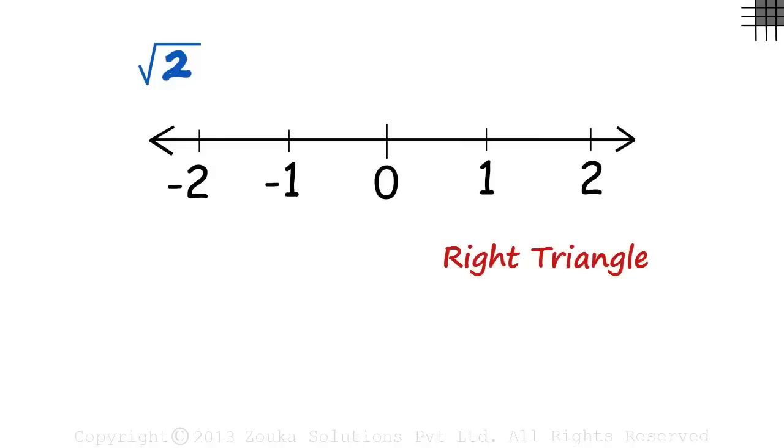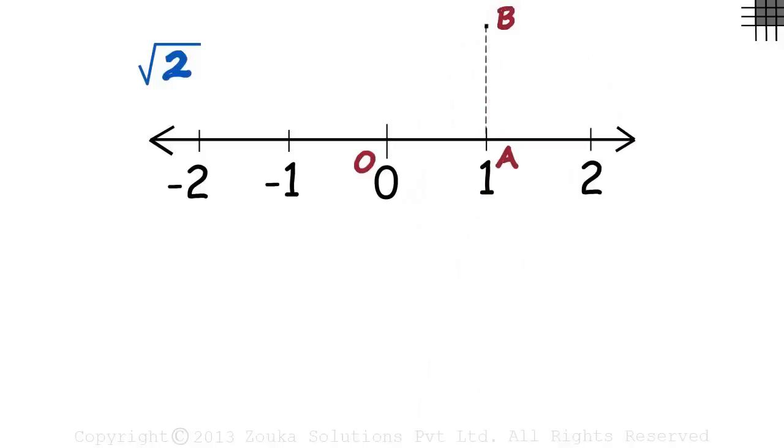We need to make a right triangle with one unit as the base. Let OA be the base of that triangle. We also want its height to be one unit long. Let's draw the height AB like this.